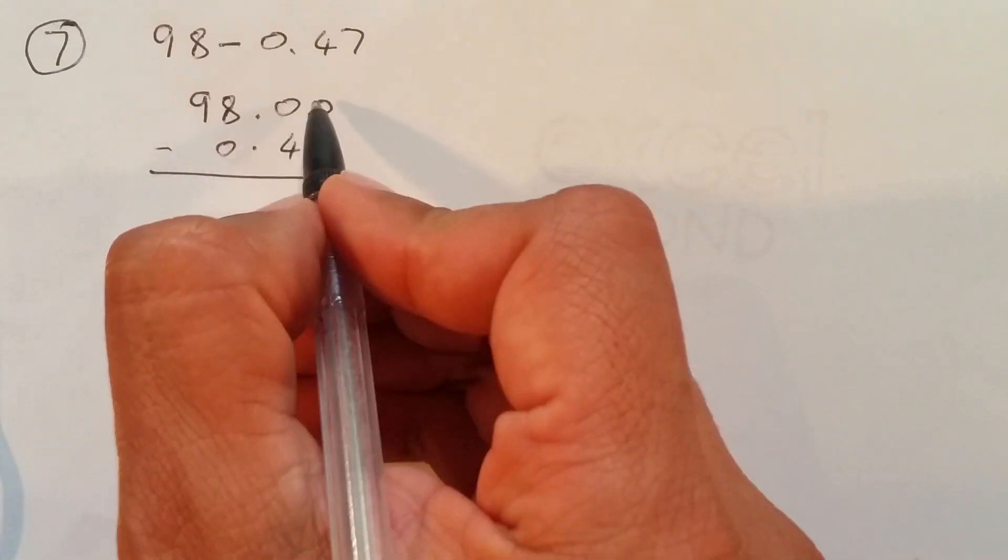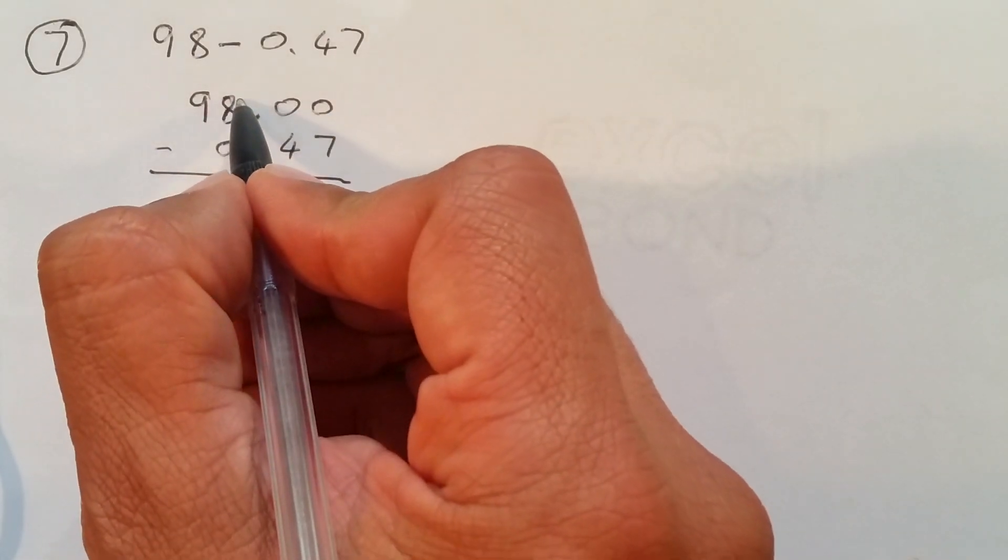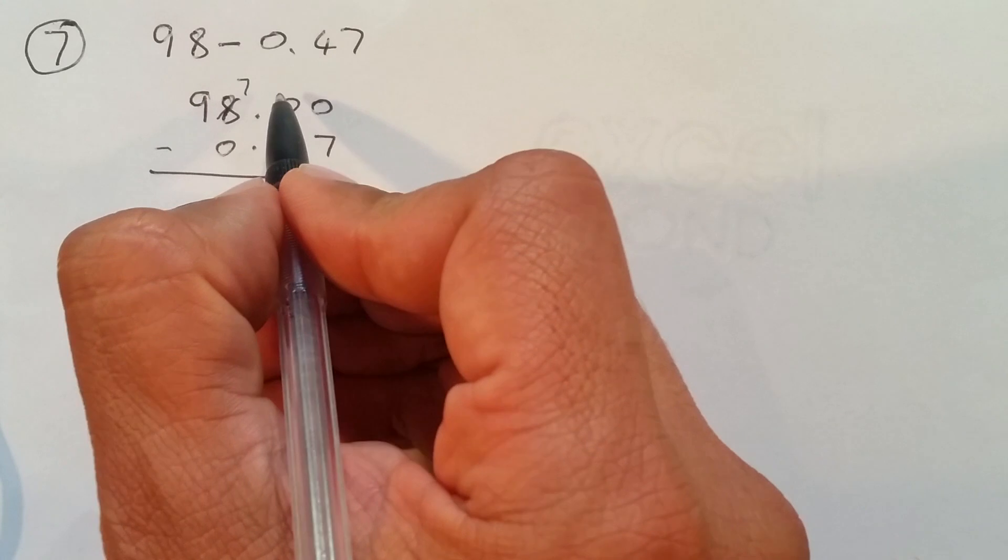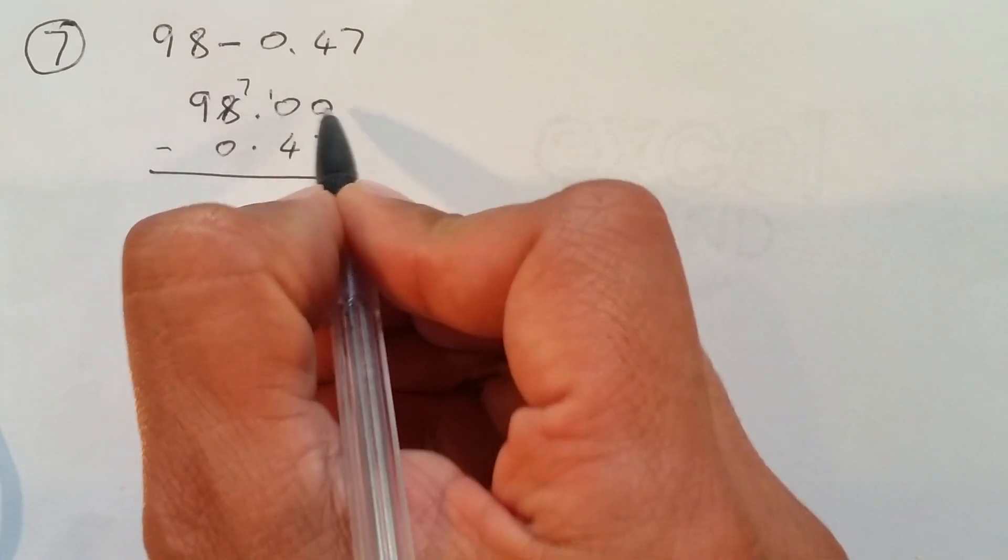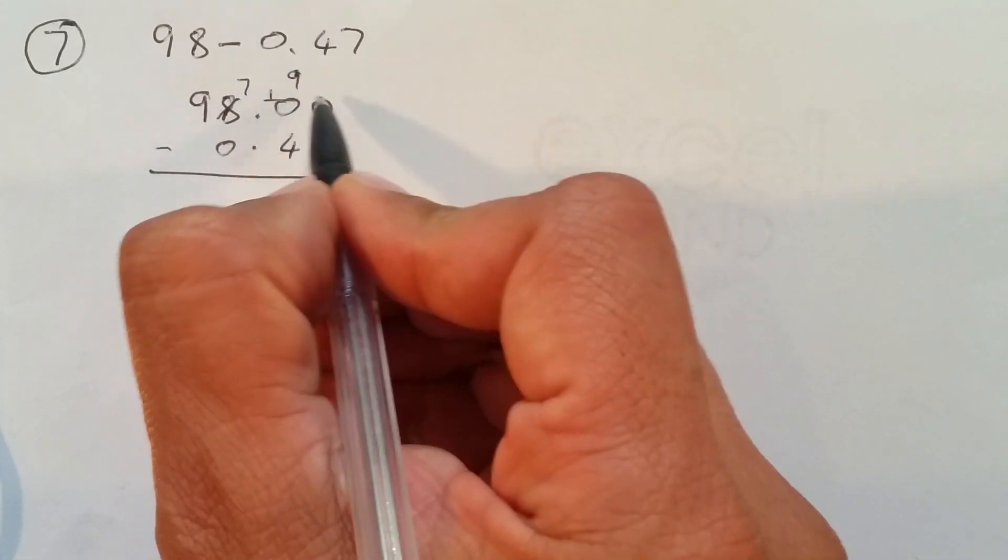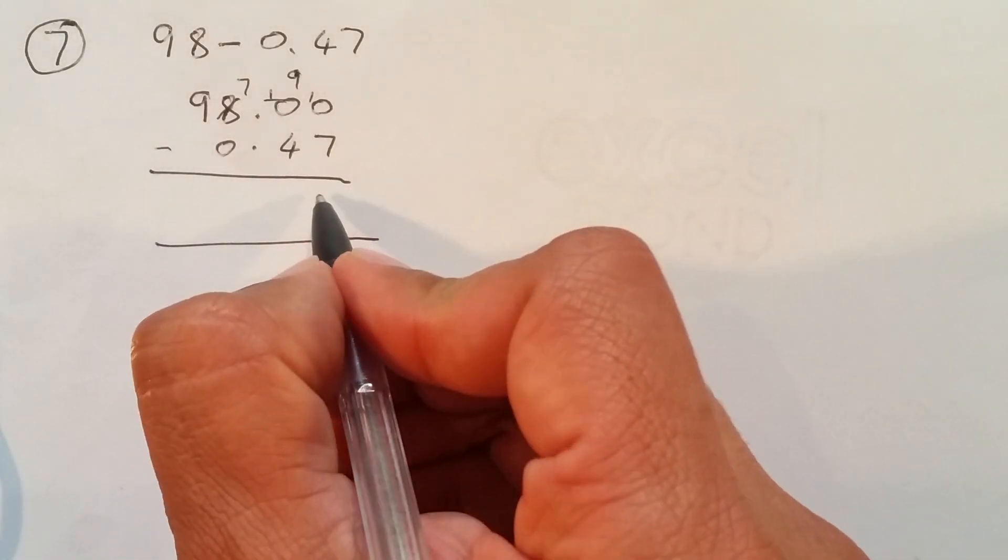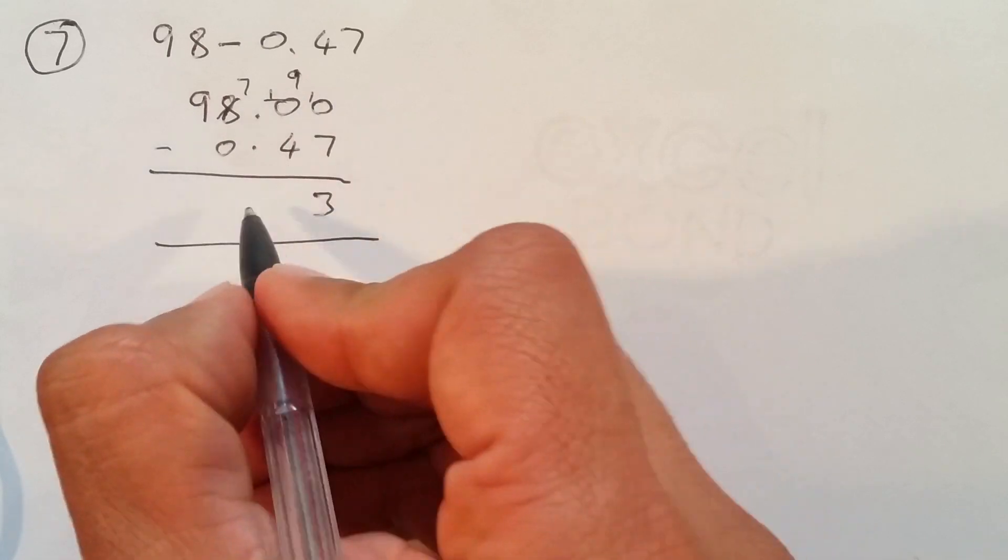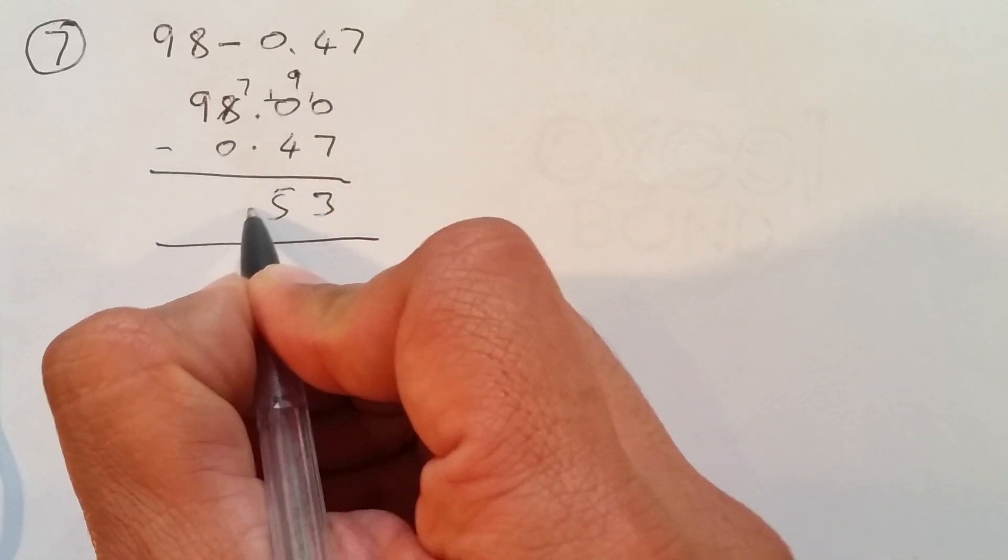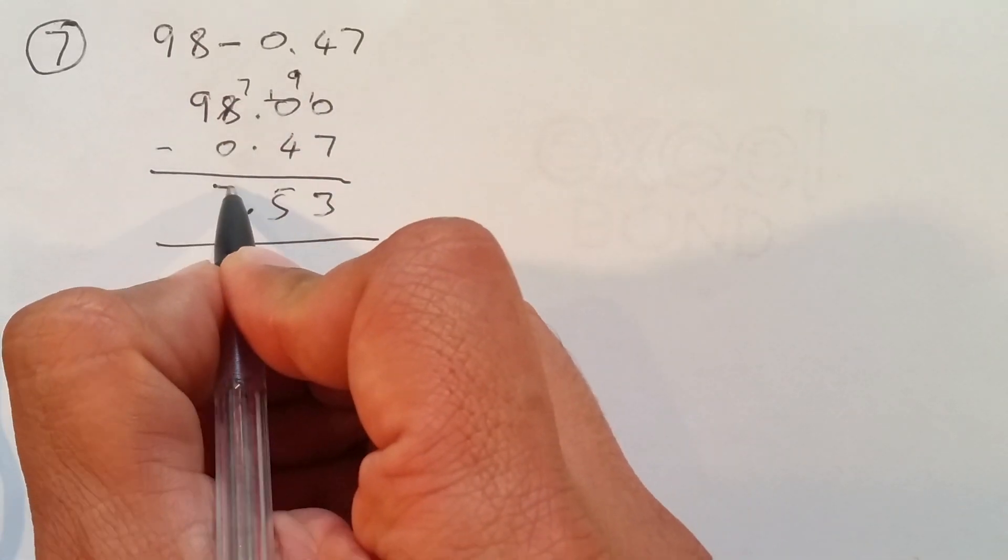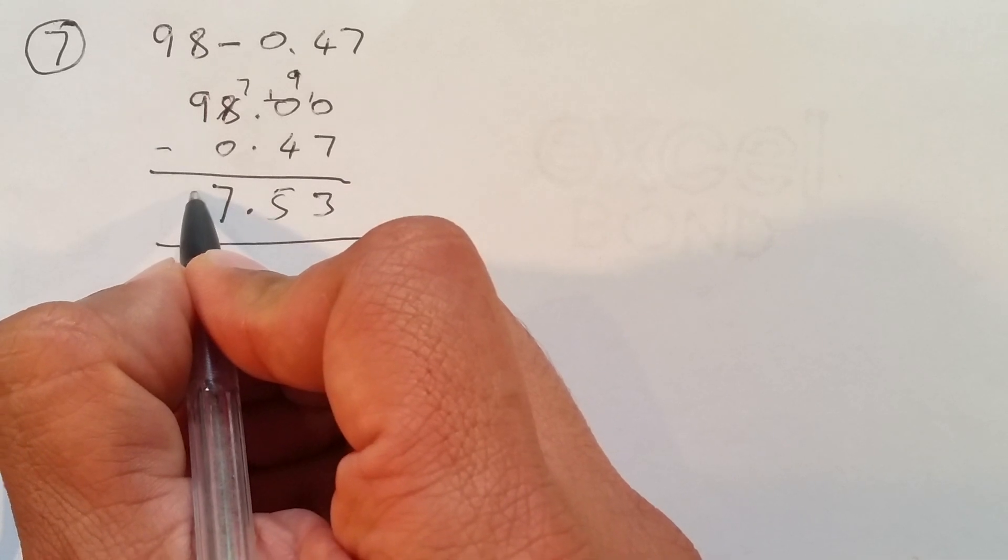So, if there are zeros, we borrow from 8. 8 will become 7. It will give 10 to that. Then 10 will give 1 to that. Then 1, that will become 9. That will become 10 again. So, 10 take over 7, which is 3. 9 take over 4, which is 5. 7 take over 0 is 7. And bring down 9. That's it. Easy.